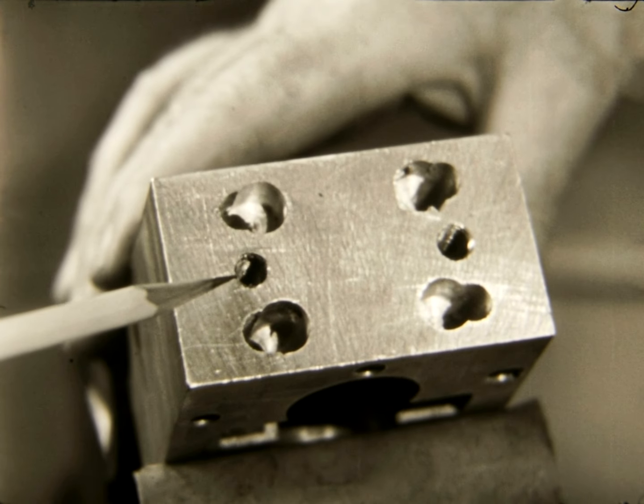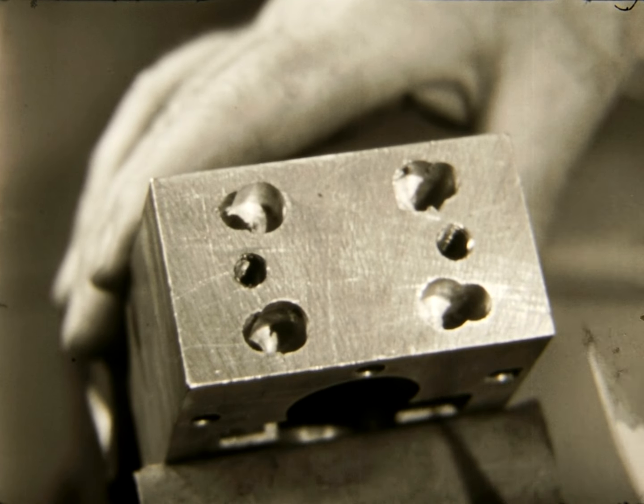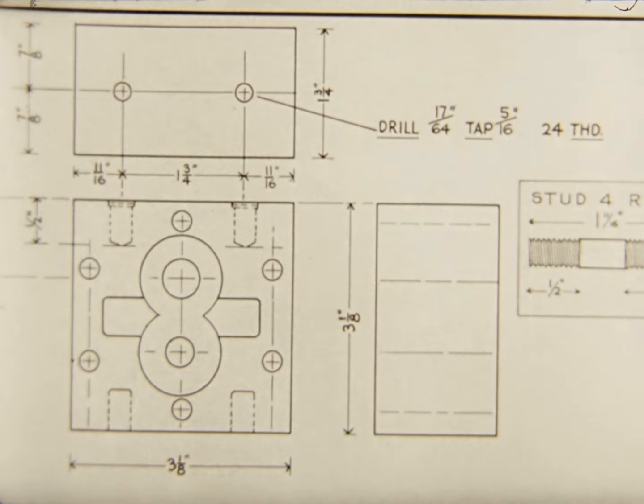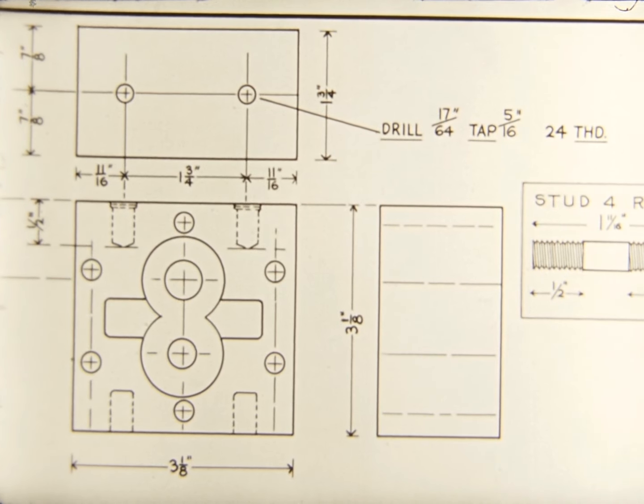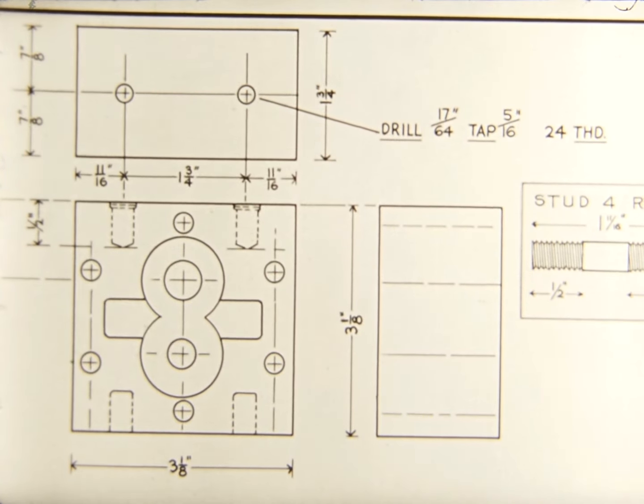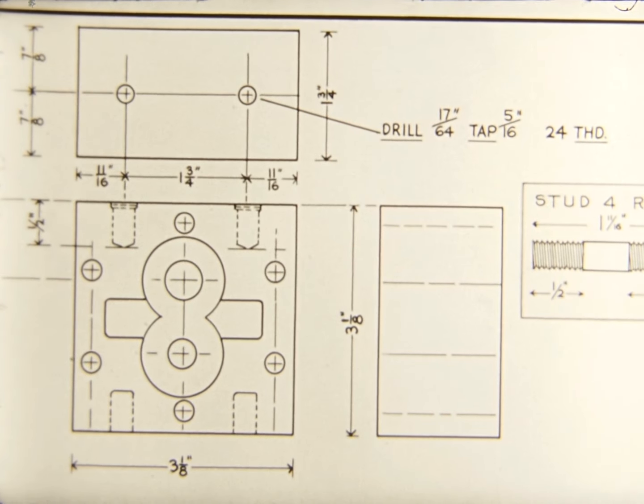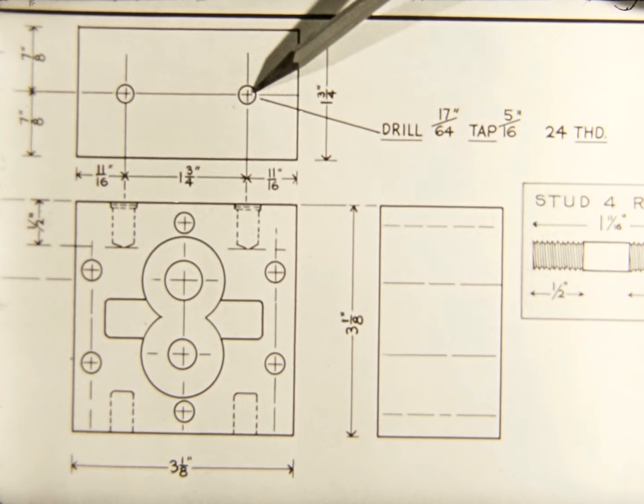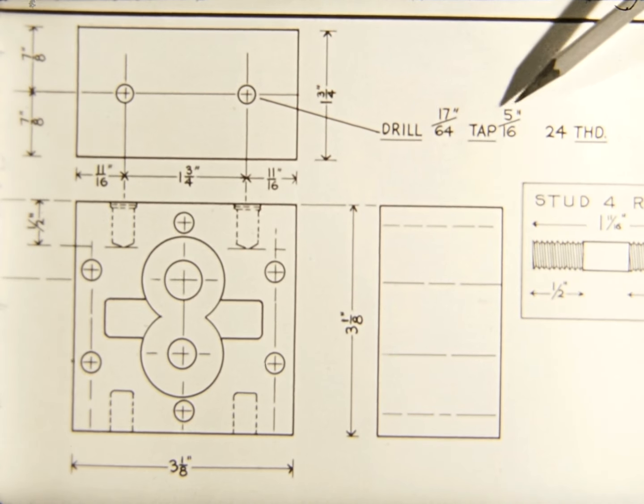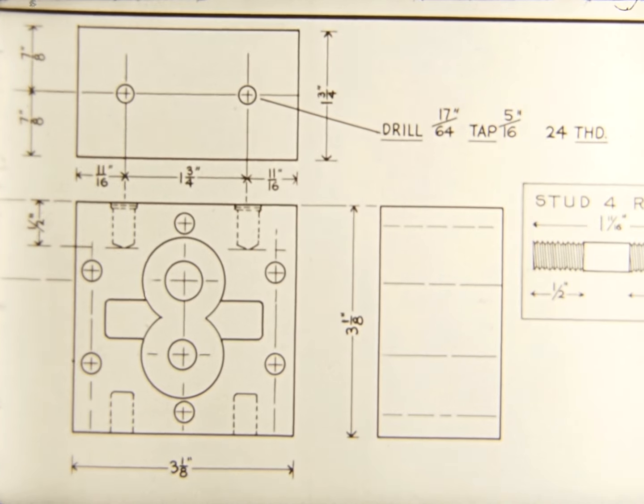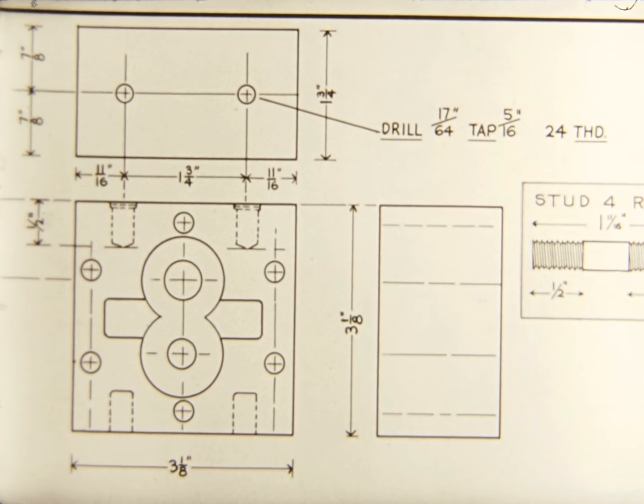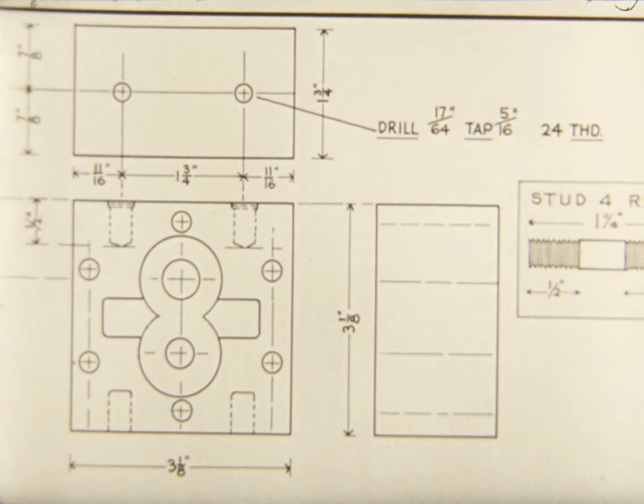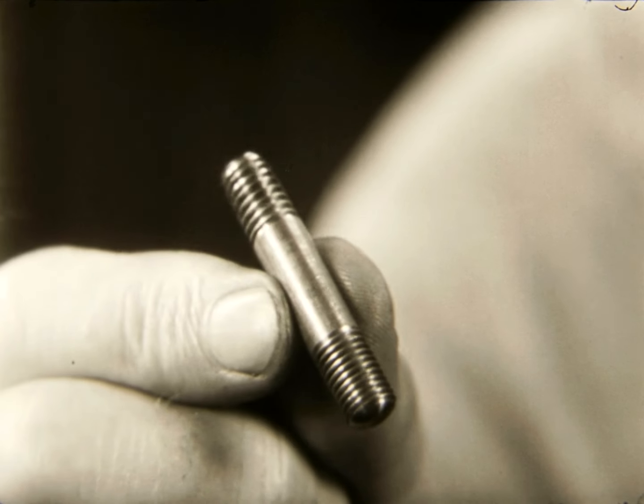Once the hole is tapped, the next job is to cut the threads on the part that screws into the hole. Again the blueprint provides the information to guide our work. In this case, a stud is to be threaded to fit this hole. It is 5/16 diameter with 24 threads to the inch, same size as the tap.